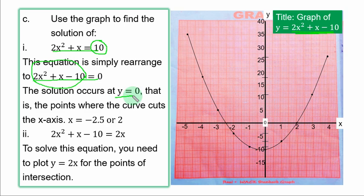Everything you have here is equal to y. It means that the solution occurs at y equal to 0. That is the point where the curve cuts the s axis. One point is here and another point. So this point is 2. On the s axis, one line is 0.5, so here should be minus 2.5. That is the solution to that equation.